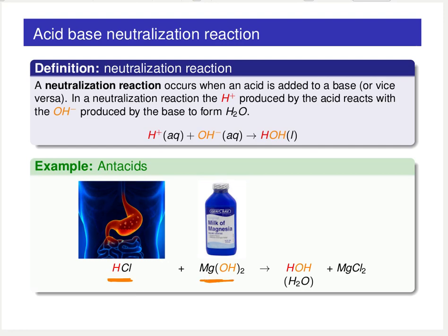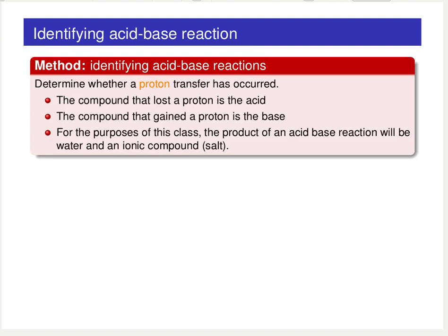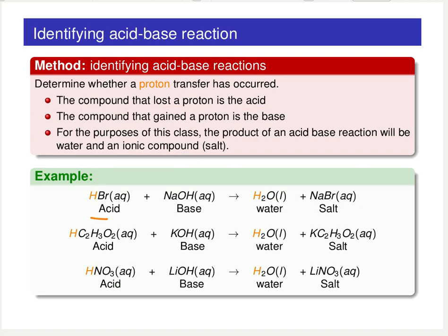That neutralization reaction alleviates the pain associated with heartburn by neutralizing the acid with magnesium hydroxide base, forming water and salt. We now have a method of identifying acid-base reactions: determine whether a proton transfer has occurred. The compound that lost the proton is the acid; the compound that gained the proton is the base. The products of the acid-base reaction are liquid water and some ionic compound — a salt. For example, HBr reacting with sodium hydroxide gives sodium bromide salt and water.